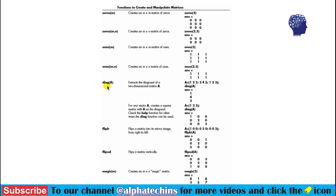The next function is diag(A), which extracts the diagonal elements of matrix A. In the example, you can see the matrix is defined first, then this function is used to extract the diagonal elements. In the second example, only three elements are defined as a simple row vector. When we use the diag function on this, it creates a diagonal matrix with those non-zero elements on the diagonal and all other elements as zero. So this function can be used in two ways: to extract diagonal elements, or to create a diagonal matrix.